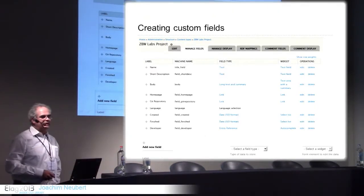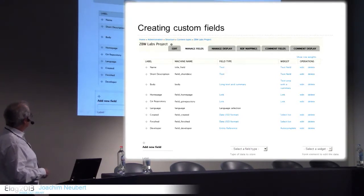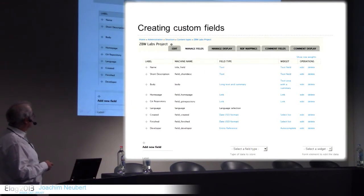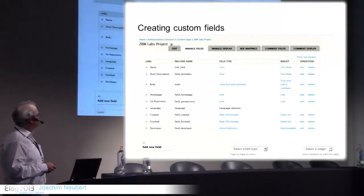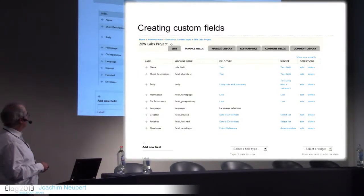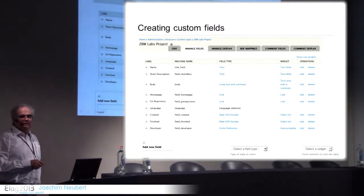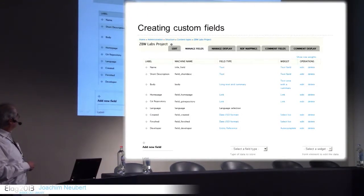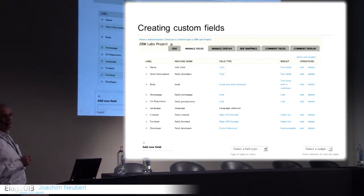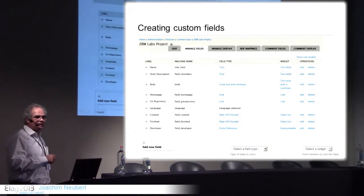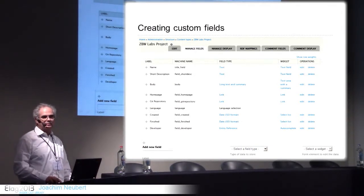The next step is to create the custom fields which are required. You have to add fields of a certain type — standard types like text or date — and you can select a widget for input of this data, for example from a list or from a calendar pop-up. What's especially interesting is the entity reference type, which allows you to reference other content types within the system. For developers, we said these are users of the system, and we can get an autocomplete list of all users and select one — making this connection within the standard CMS without any custom coding.